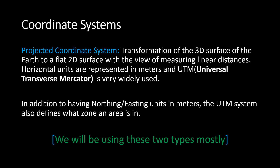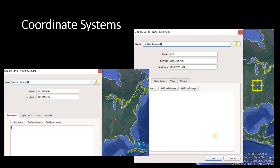Now we have another coordinate system called the projected coordinate system. There are more coordinate systems than these two, but in this series we're just going to be using these two. The projected coordinate system is the projection of a 3D surface to a 2D surface for measuring linear distances. A famous projected coordinate system is the UTM system, which is very widely used. In UTM systems there are northing, easting, and zone definitions.